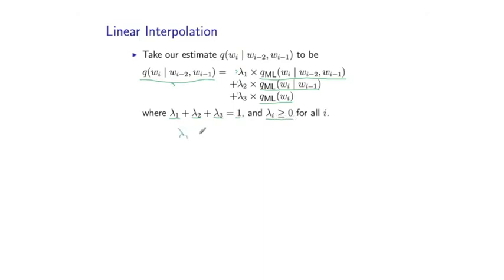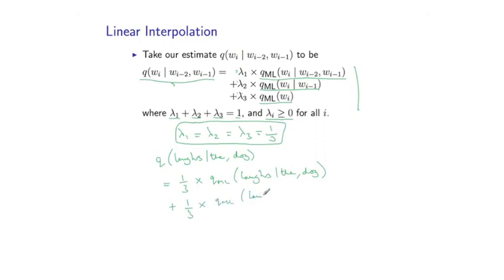So for example, we might have lambda 1 equals lambda 2 equals lambda 3 equals a third, which basically means we give one third weight to each of these maximum likelihood estimates. Let's go through a specific example. Say we want to estimate the parameter corresponding to the probability of the word laughs, given that the previous two words are the and dog. Under this definition, and assuming that our lambda values are all equal to a third, we would have one third times the maximum likelihood estimate of laughs given the dog, and then one third times the maximum likelihood estimate of laughs given just the word dog, and then finally a third times the maximum likelihood estimate of just laughs without any contextual sensitivity.